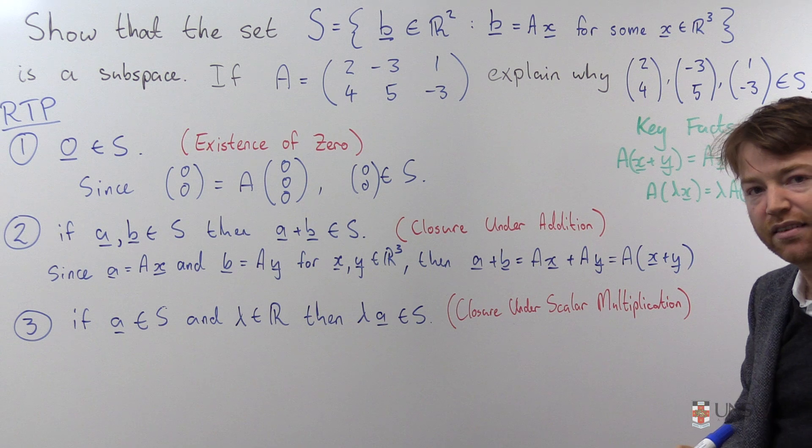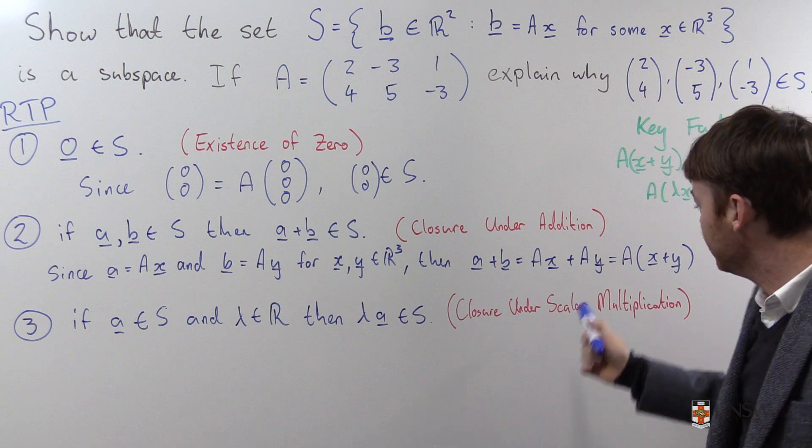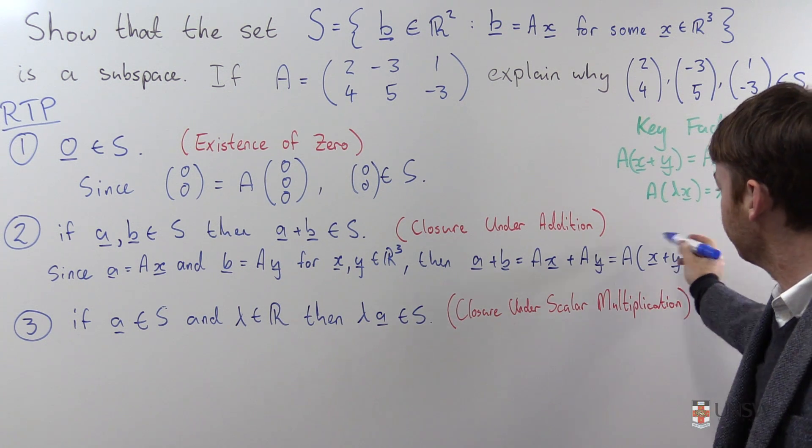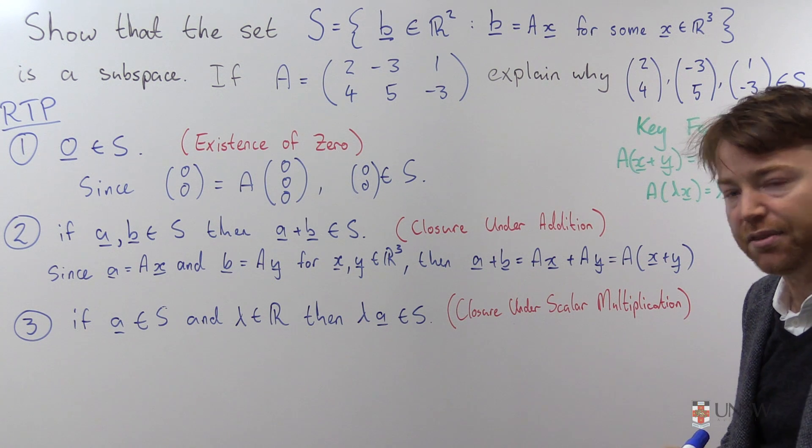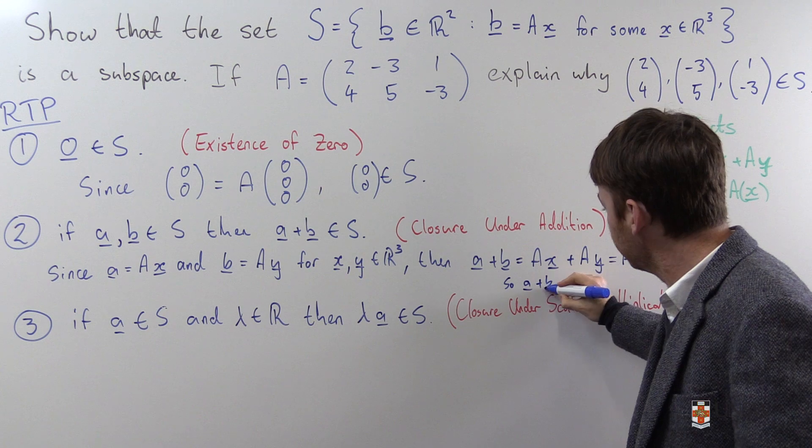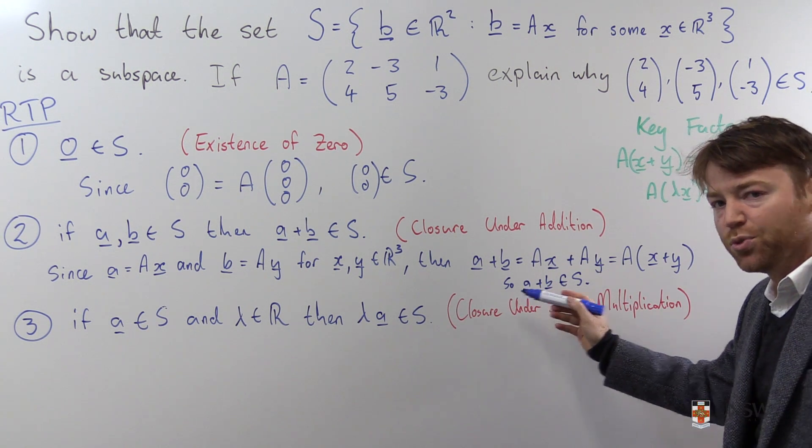This is exactly what I wanted. The vector A plus B is in the image of A. In fact, it's mapped to A plus B by the vector X plus Y, which is in R3. So, A plus B is in S.